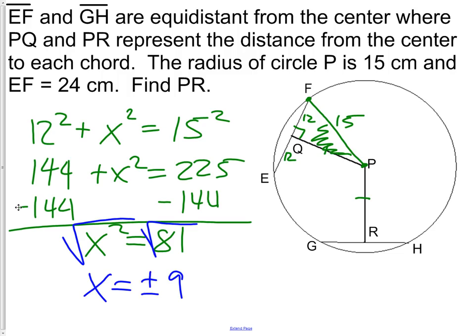However, since we're talking about the distance of an object, we can't use a negative measurement because we can't have a negative distance, which means our answer is 9. So the distance from P to Q and the distance from P to R is 9.